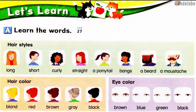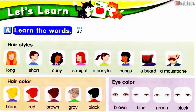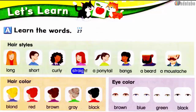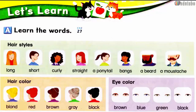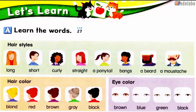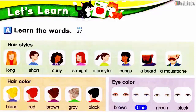Page 50. Let's Learn. A: Learn the words. Hairstyles: Long. Short. Curly. Straight. A ponytail. Bangs. A beard. A mustache. Hair color: Blonde. Red. Brown. Gray. Eye color: Brown. Blue. Green. Black.